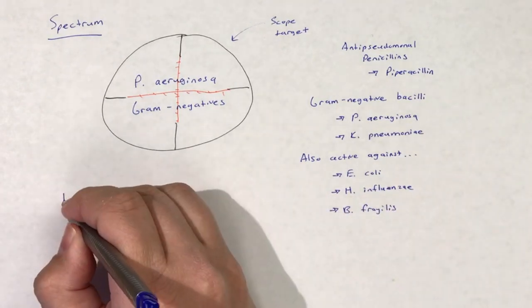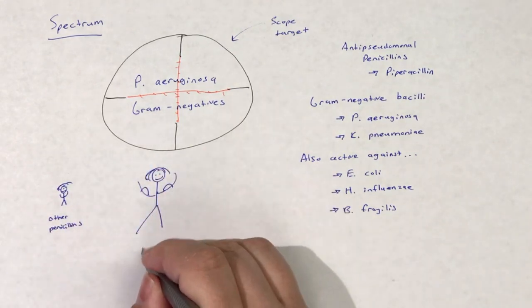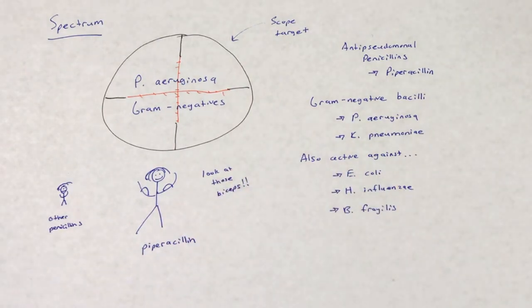In addition, piperacillin is active against most E. coli, H. influenzae, and B. fragilis. Piperacillin has the broadest spectrum out of all other penicillins.